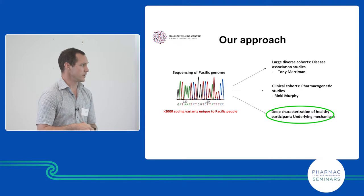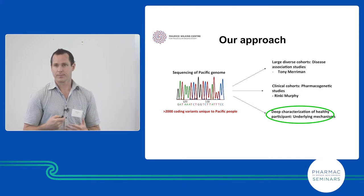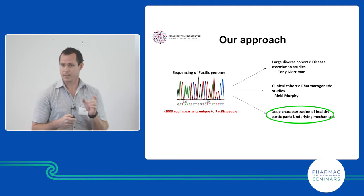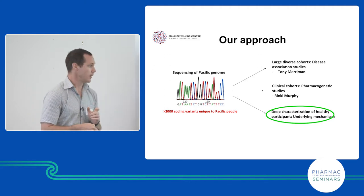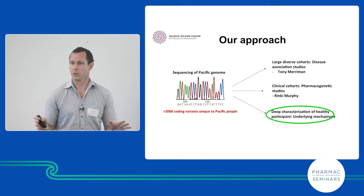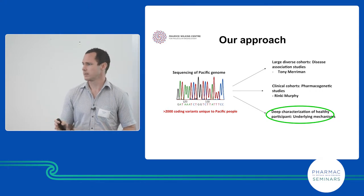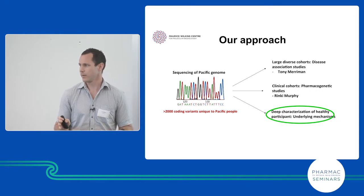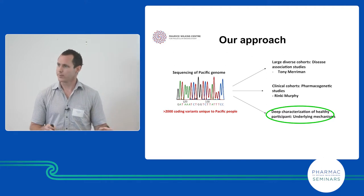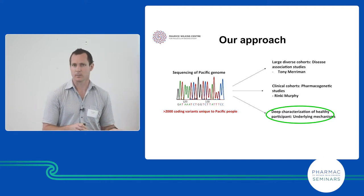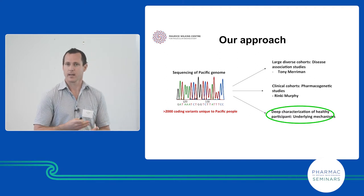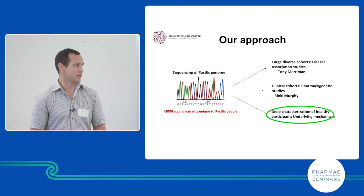Tony Merrin's group has sequenced 50 people's genomes of Polynesian ancestry. Looking at some parts of this genome, they've found 2,000 variants that are completely unique to this population — almost not found anywhere else in the world. Most of these won't do anything, but a few of them will, and understanding what these do will put us forward in understanding risk factors and treatment options.